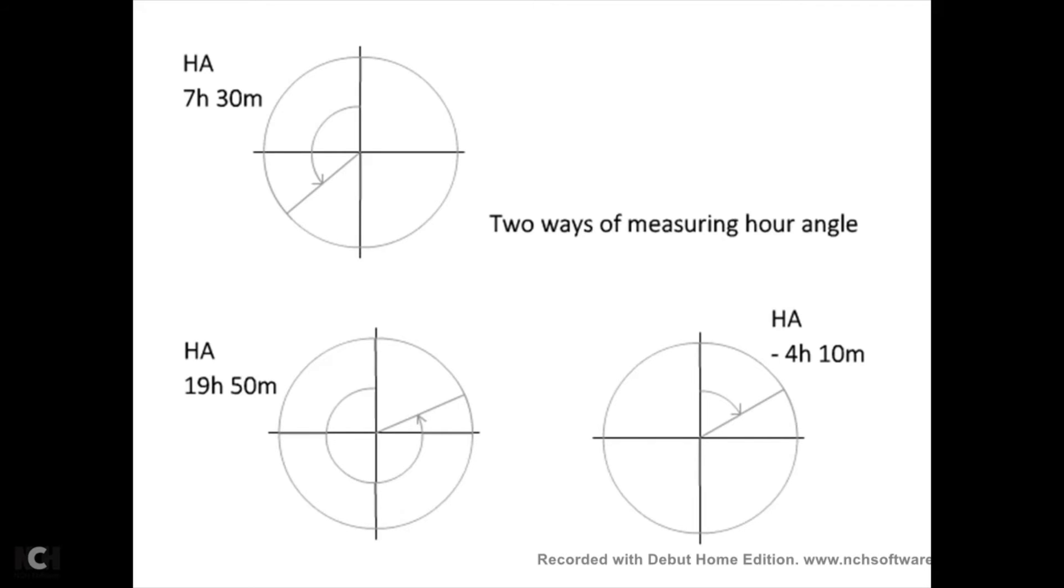Now there's two ways of measuring hour angle. I'm not sure which one they're going to use in the exam because this is new on the specification and there wasn't a question on it last year, and I don't write the exam paper. Now, if I'm saying it's the angle west of the prime meridian - now if this is less than 12 hours, then that's no problem. See on the top left diagram, 7 hours 30 minutes.